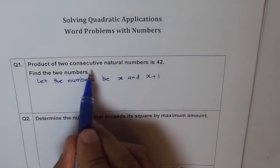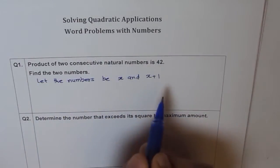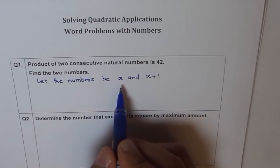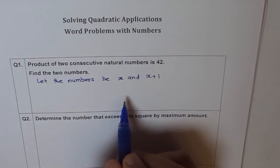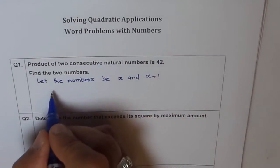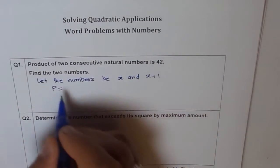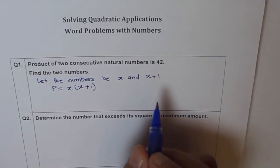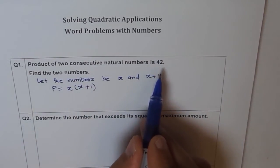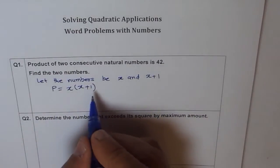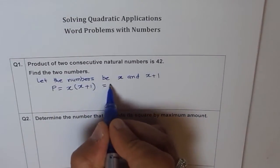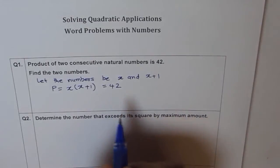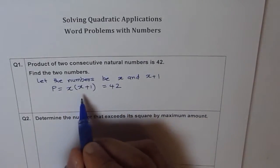Now it says product of two consecutive natural numbers, okay? So we are expecting answers which are greater than 0, and natural numbers are greater than 0. Product means, let's say product equals to x times x plus 1, is that okay? And what is the product given? 42. So let's write, this is equal to 42. So their product is 42. What are the numbers?